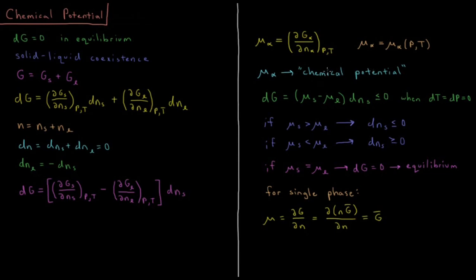The chemical potential is the change in Gibbs energy per number of moles of particles in that phase. So the change in Gibbs energy from changing the number of solid and liquid particles is the chemical potential of the solid minus the chemical potential of the liquid, times the change in the number of particles. For any spontaneous process in a closed system at constant temperature and pressure, this quantity must be less than or equal to zero.